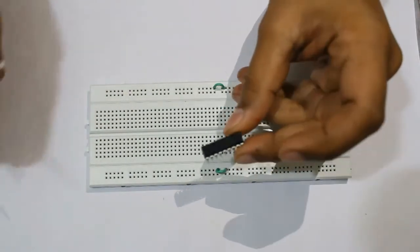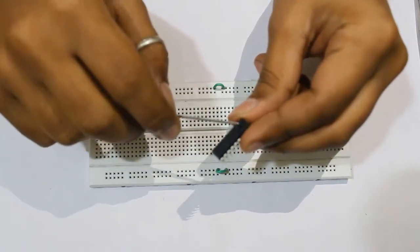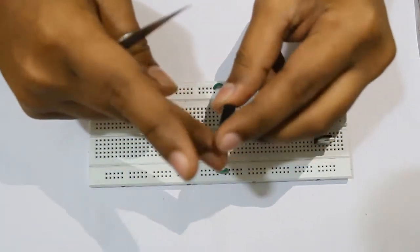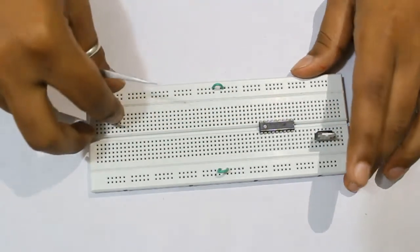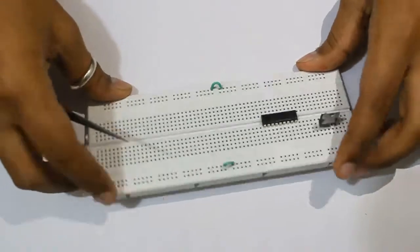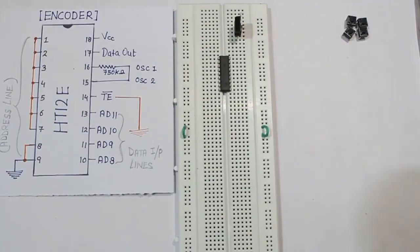I am going to put it on the breadboard. Now this is my encoder IC, now I am going to place this on my breadboard. See the pin configuration, I have kept it in the same way as you can see in the diagram.